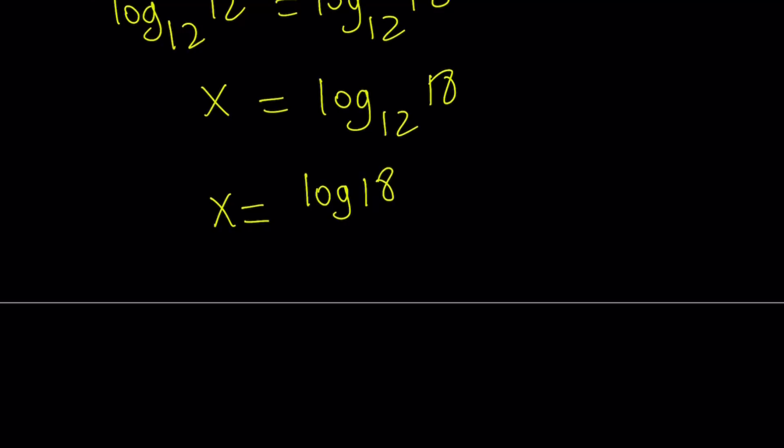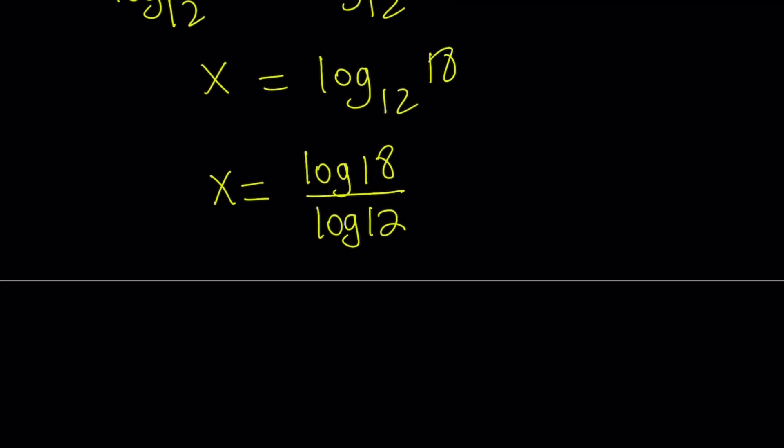ln, which is the natural logarithm. So I guess this is called common logarithm, right? Base 10. Anyway, so we can write this x as log 18 over log 12.